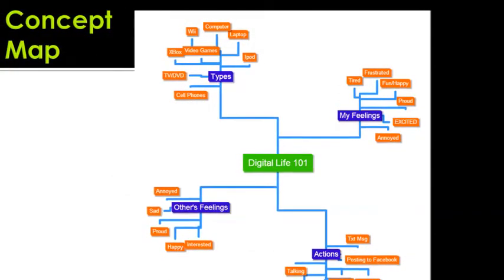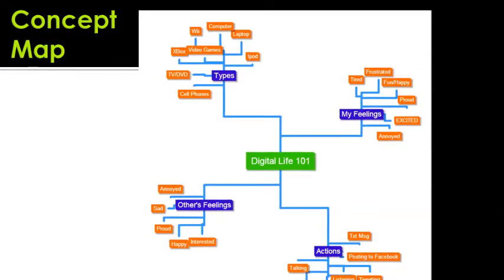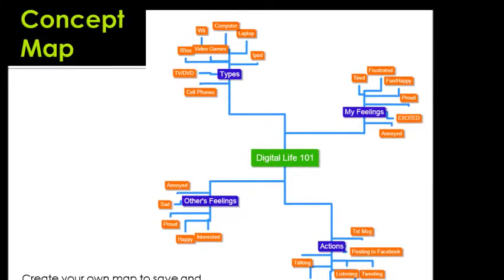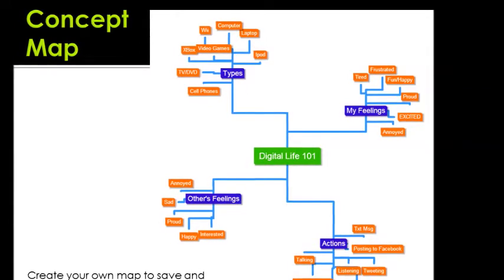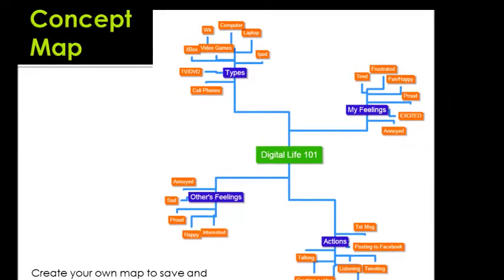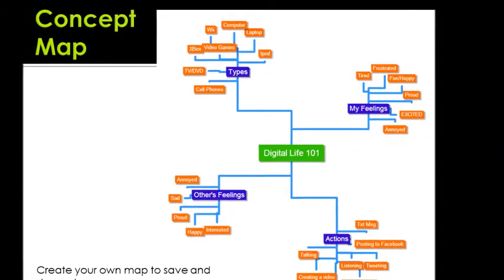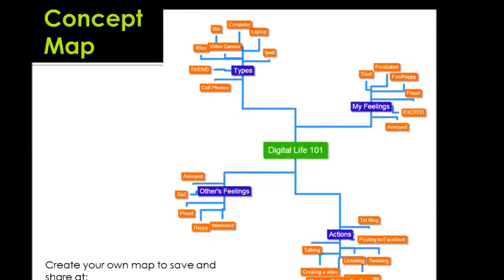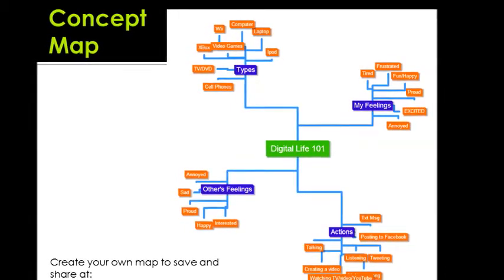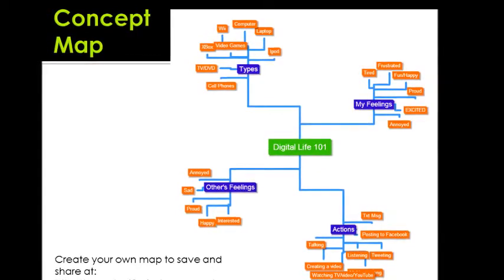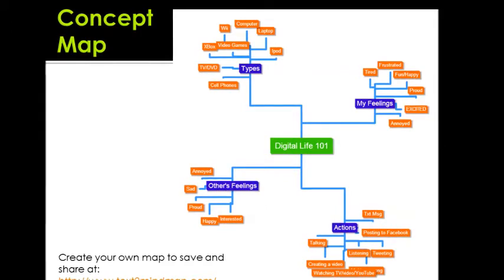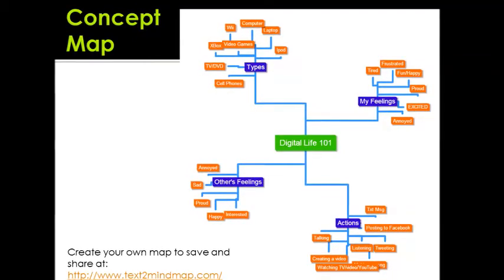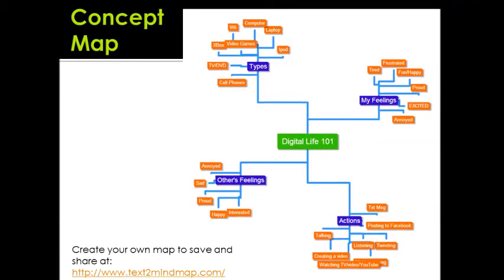This is a sample concept map. As you can see, we have the four headings including types, our feelings, others' feelings, and the actions taken with devices. Many devices, such as video game consoles, cell phones, and televisions, surround us. However, the media lives of all people are not the same. Some people use more digital devices on a regular basis than others, and some people have preferences for certain devices. As you look at your map, ask yourself: would the map of other members in your family look the same? Would age, gender, race, religion, or education be a factor? And do you take this into account when dealing with people online and in person?